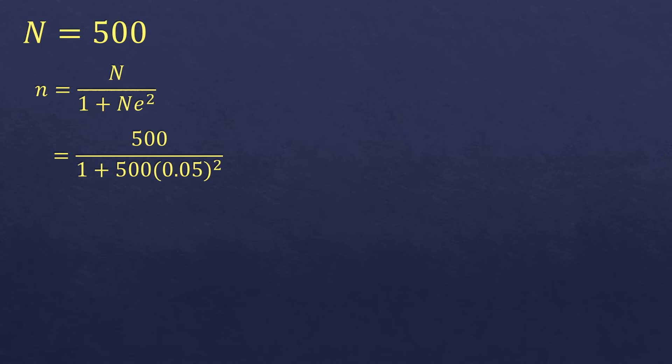We are going to compute first the 0.05 squared, which is 0.0025, meaning you're going to multiply 0.05 by itself. Then we are going to multiply 500 times 0.0025, which will be 1.25. Then we just copy the rest.